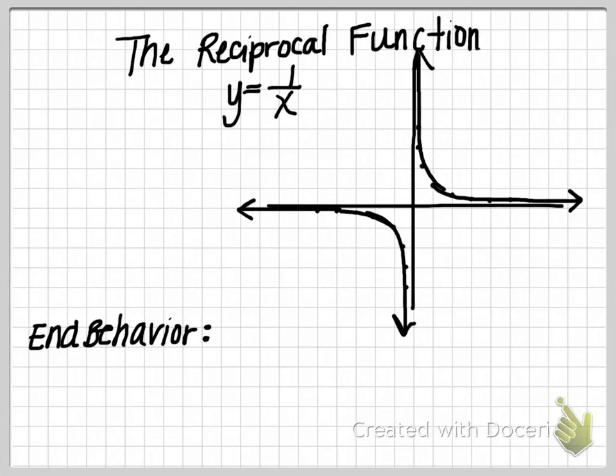Now let's take a look at the end behavior of this function. The end behavior is very different than the end behavior on previous functions we looked at. For example, we've looked at polynomials such as lines and parabolas or S-shaped curves, cubics. The end behavior on these polynomials, the ends of the graph are either rising or they're falling. Those are the only two options for our end behavior on the polynomials. However, the end behavior for this rational graph, y equals 1 over x, is very different.